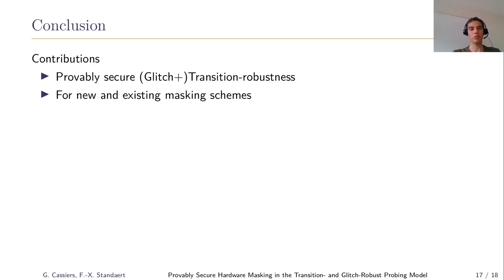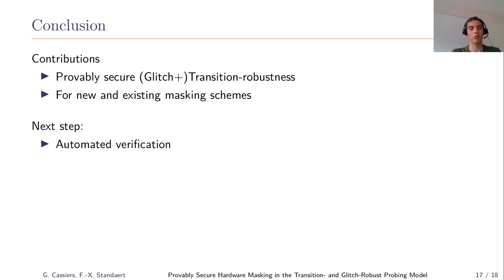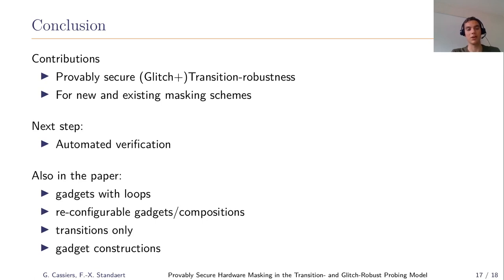To conclude, our main contribution is a set of provably secure glitch- and transition-robust masking schemes for hardware circuits, applicable to existing masking schemes under certain conditions and also for new gadgets. A natural future direction is automated verification of the required implementation properties. Additional topics in the paper not covered here include more sophisticated gadgets with loops or runtime modifications, gadgets for the transition-only non-glitchy case, and the full construction of all gadgets. Thank you for your attention; I'm happy to answer questions.